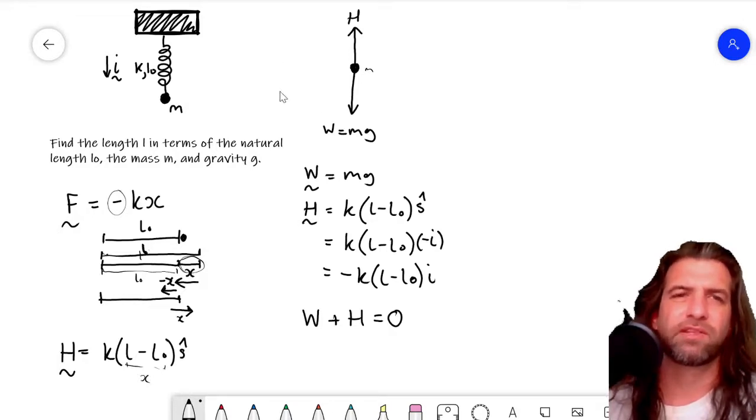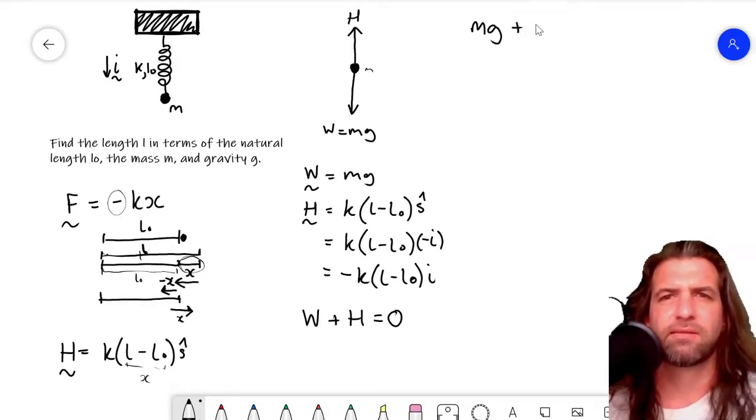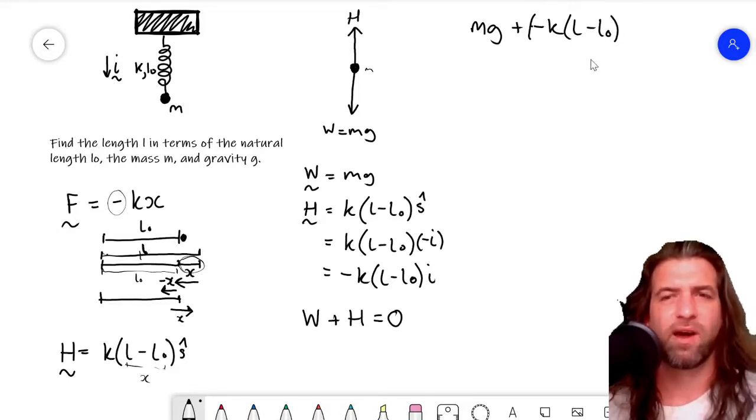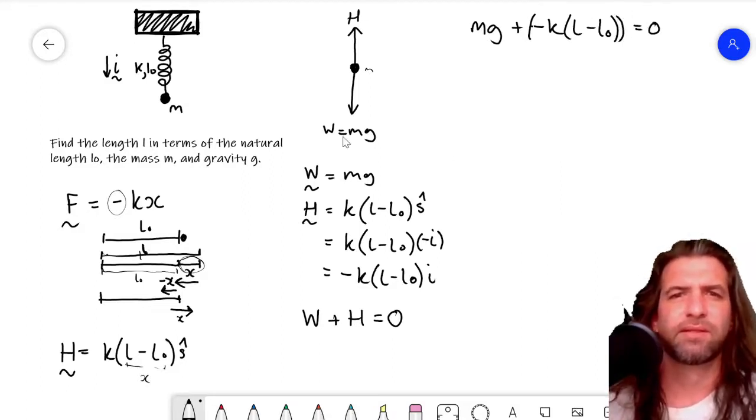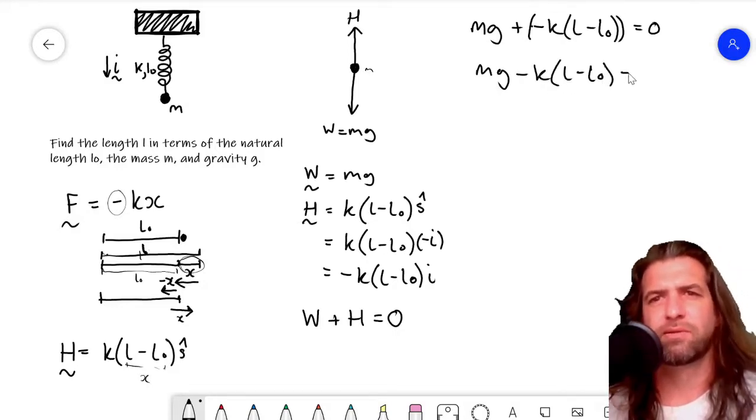Well, we're just going to resolve this now in just the i direction. So I don't have to worry about putting i. We're kind of turning it into a scalar. So let's start putting in the values. Now we've got mg plus H, which is now minus k(L - L0). We're going to leave the i because we're resolving in just the i direction.